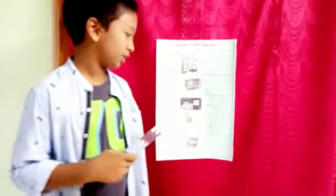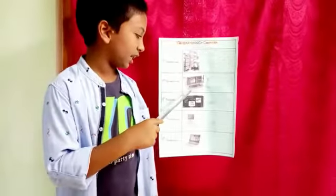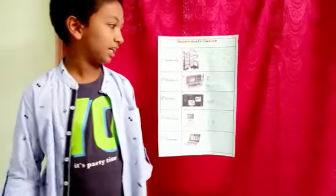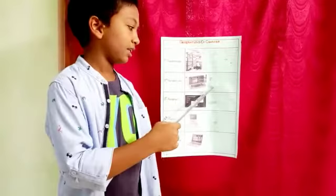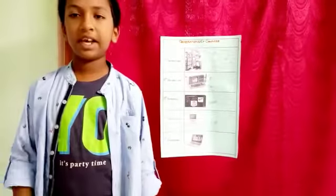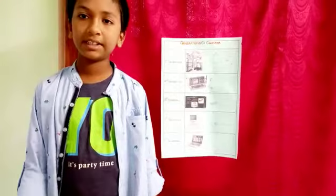Second generation's core computer. Its time period is 1956 to 1963. Its name was RCA501. In that they used transistors. It takes less power and gives less heat.